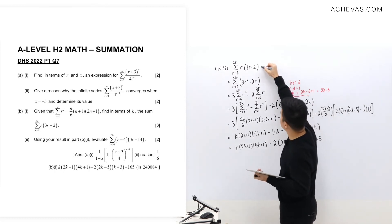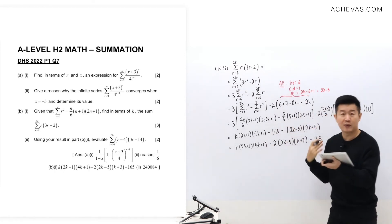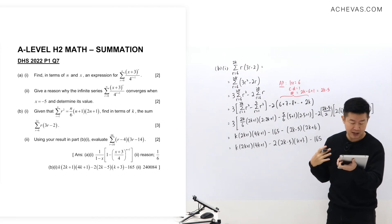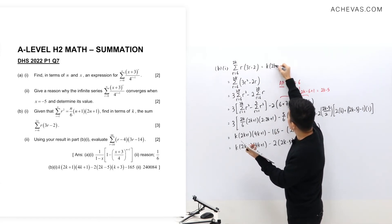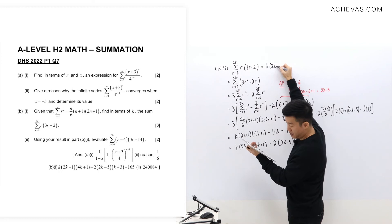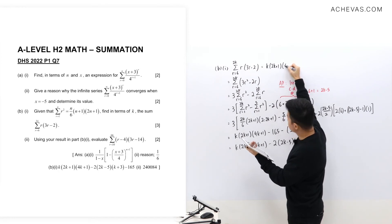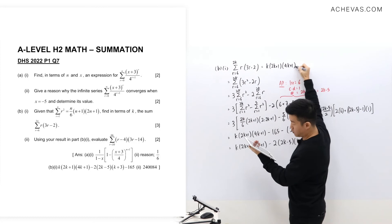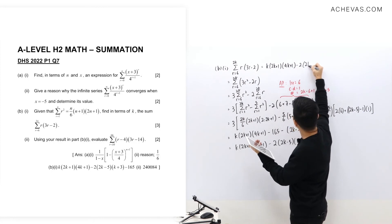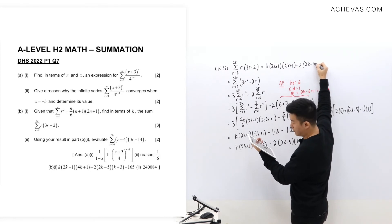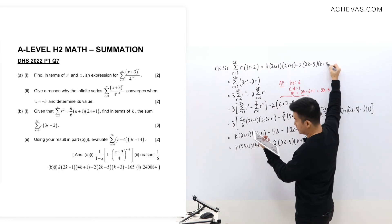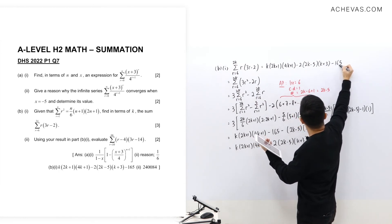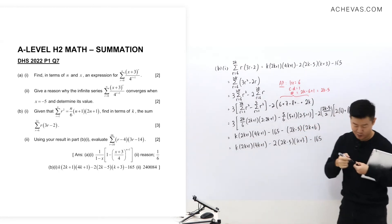Let me write down the answer for Part B1 here since I'll be referring to it in Part B2. The answer is k(2k+1)(4k+1) - 2(2k-5)(k+3) - 165.